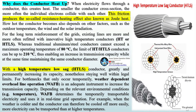Why does the conductor heat up? When electricity flows through a conductor, this creates heat. The smaller the conductor cross-section, the more often the individual electrons collide with each other. This friction produces the so-called resistance heating effect, also known as joule heat. How hot the conductor becomes also depends on other factors such as the outdoor temperature, wind, and solar irradiation. For long-term reinforcement of the grids, existing lines are more and more often refitted with innovative high-temperature conductors, HT or HTLS.